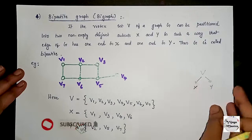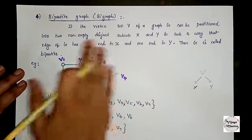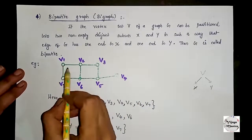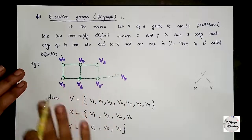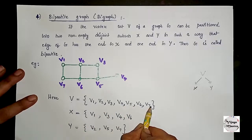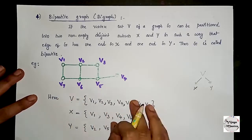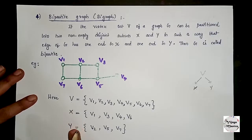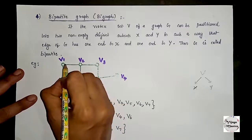To partition into X and Y sets: the vertex set is V1, V2, V3, V4, V5, V6, V7. We form two non-empty disjoint subsets X and Y.